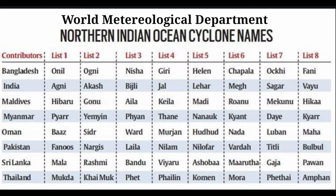The department which looks after cyclones and weather has made zones across the whole world, and there are a total of nine zones. One of those zones is the Northern Indian Ocean zone, which includes countries like Bangladesh, India, Maldives, Myanmar, Oman, Pakistan, and Sri Lanka. These countries provide a list of particular names, and other areas where cyclones hit are given the opportunity to name them in alphabetical order.